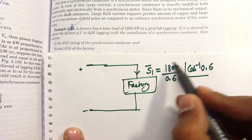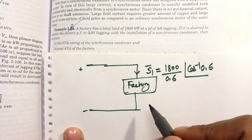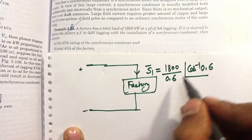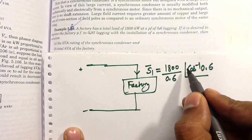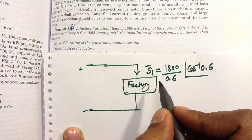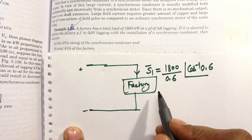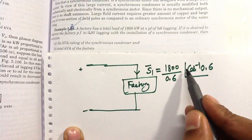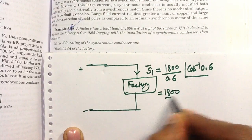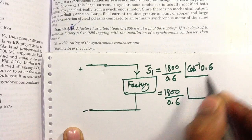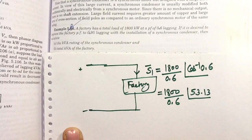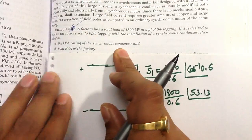The magnitude of the complex power is 1,800 divided by 0.6 kilovolt-ampere. I have used the positive sign for the angle because the factory is operating at a lagging power factor. So it becomes 1,800 upon 0.6 at angle 53.13 degrees.